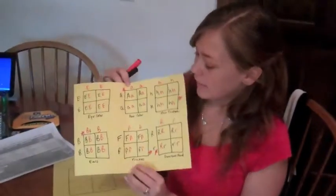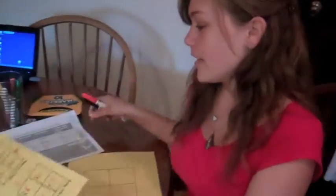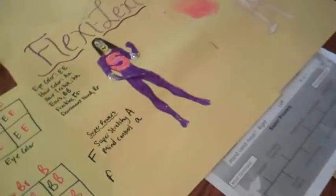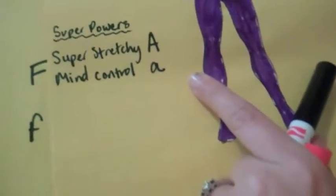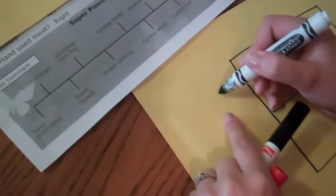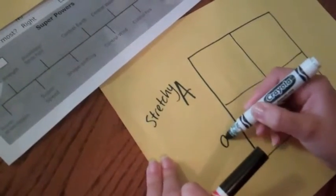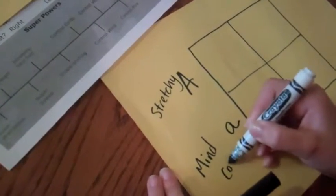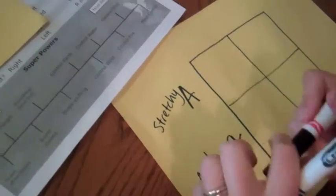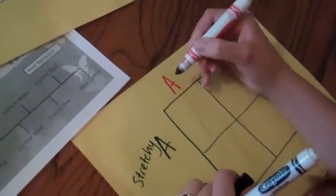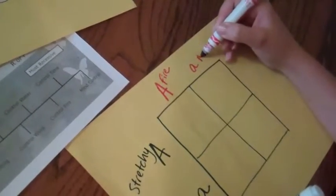Now that we've finished our standard observable traits, we're going to go ahead and move on to the superpowers. The superpowers are a little bit trickier in that we have to compare the different traits as far as dominant and recessive against each other. So here, we have mom with superstretchy as dominant and mind control as recessive. So we're going to put mom over here with a capital A for superstretchy, and a lowercase a for the recessive mind control. Now dad over here controls fire, and that's his dominant trait. So we're going to put a capital A here with fire and a lowercase a for his recessive mind control.